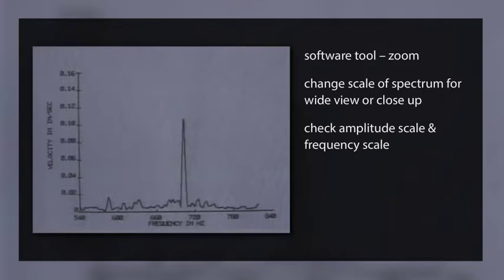Another software tool you should know about is the zoom. It allows you to change the scale of the spectrum for a wide view or a close-up. When you first look at a spectrum, be sure to check both the amplitude scale and the frequency scale so that the zoom control can't confuse you.